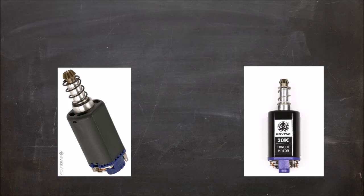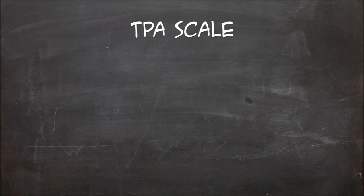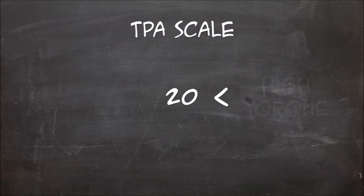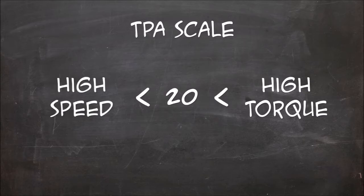Now, how do you apply this? Say standard neodymium motor TPA is 20. Those motors with a TPA higher than 20 are high torque, and those motors with a lower TPA are high speed.